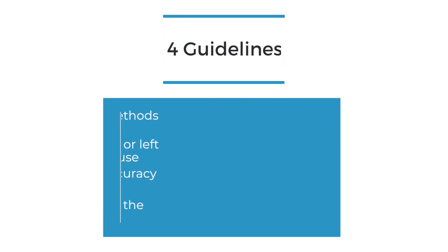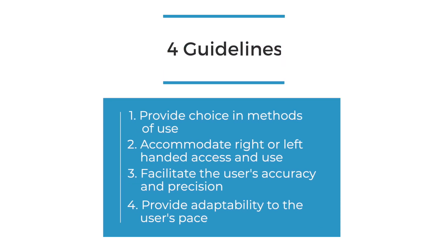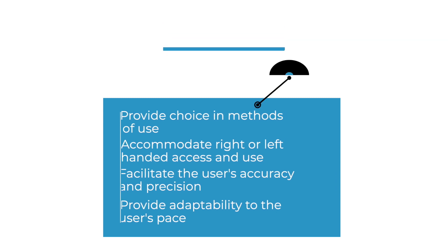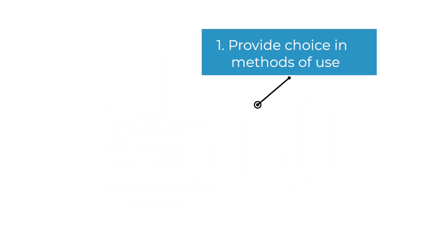Principle 2 contains four guidelines that should be present in a design that is following this principle. The first guideline is to provide choice and methods of use.